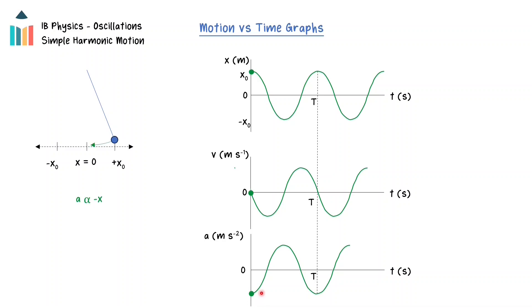As the pendulum swings into the equilibrium position, the displacement will become zero meters at a time of a quarter period. The velocity is a maximum at the equilibrium position, and the horizontal acceleration at the equilibrium point is zero meters per second squared.